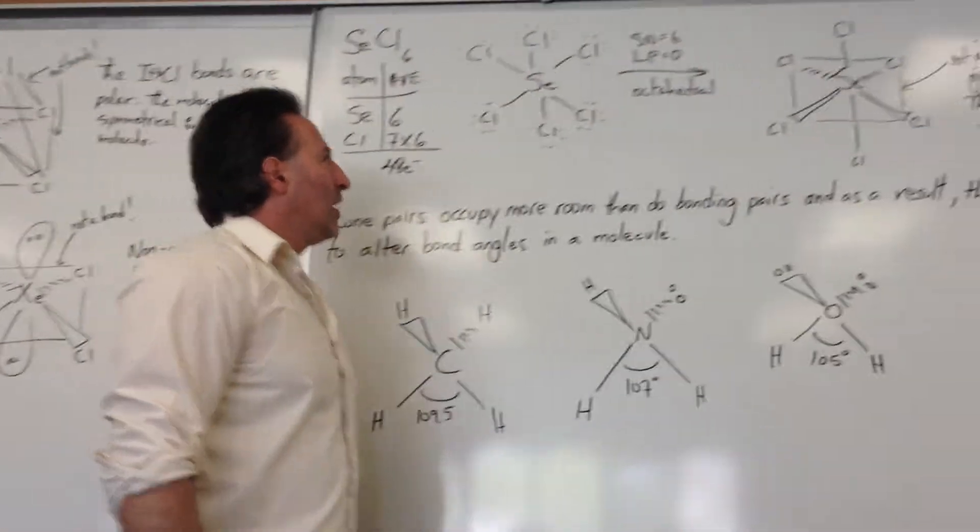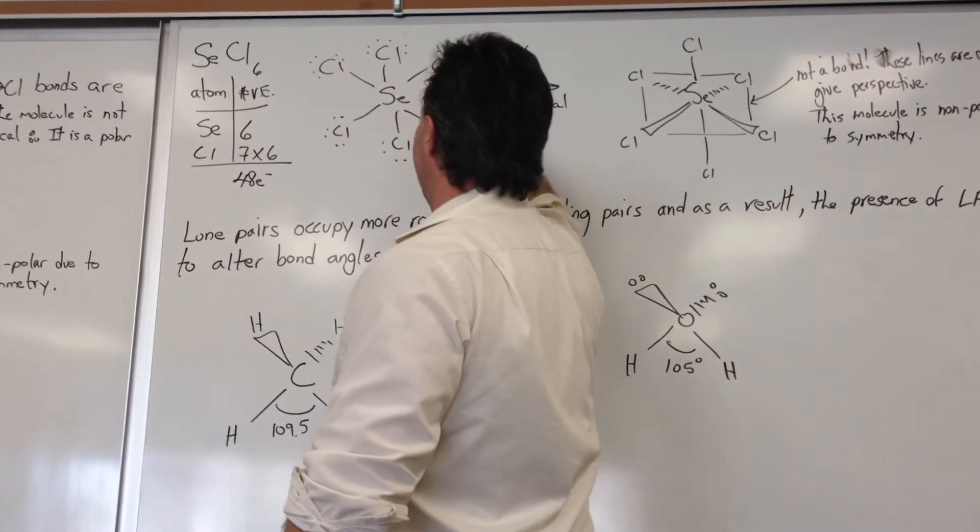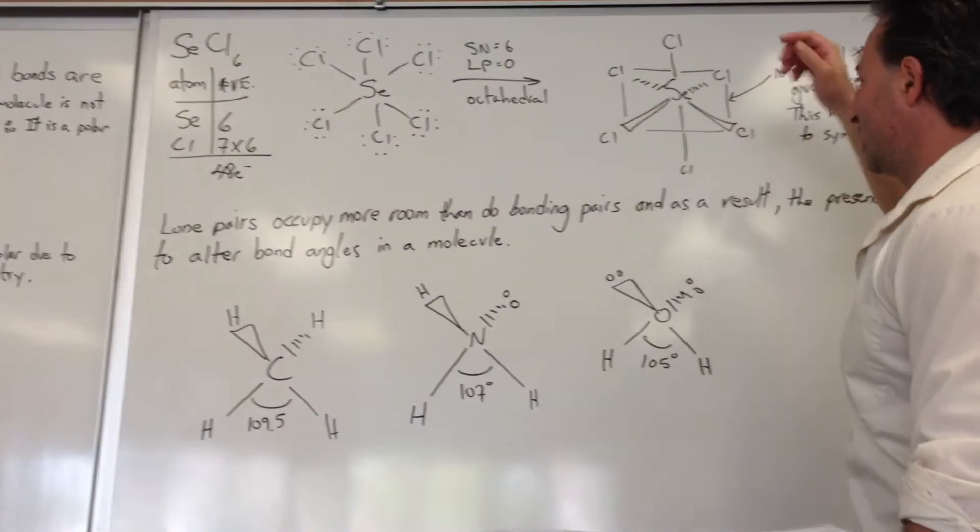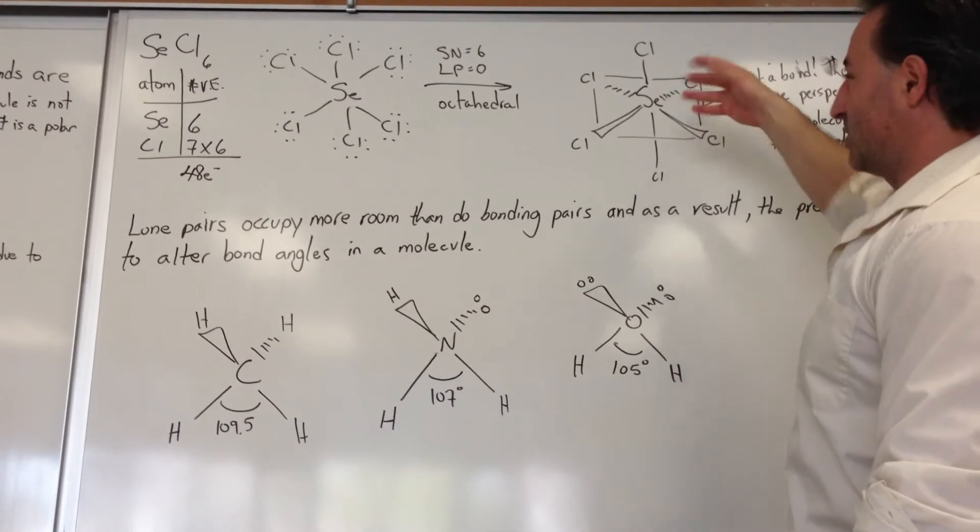With selenium hexachloride, we have 40 electrons and a steric number of 6. No lone pairs, so that's straightforward. It's octahedral. All the bond angles are 90. They're all equivalent. Any way you flip this molecule is going to look the same.